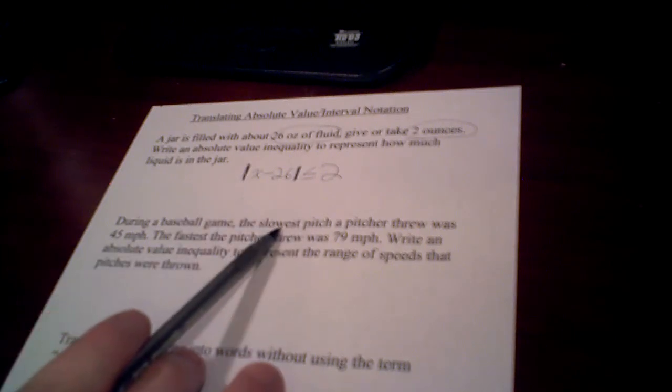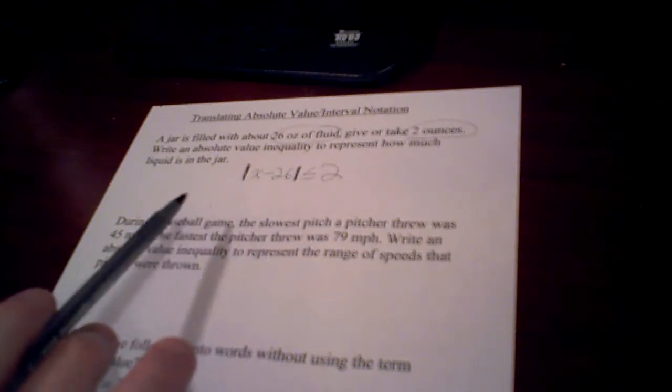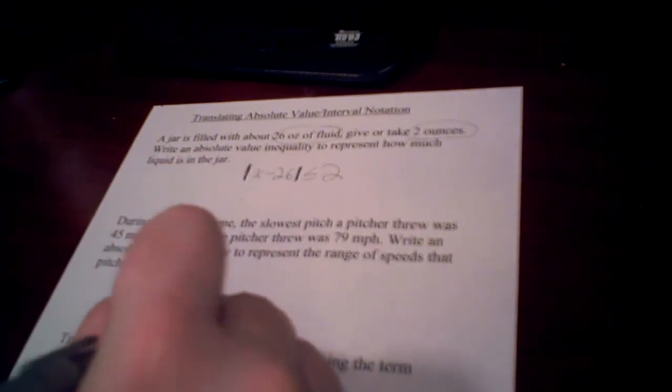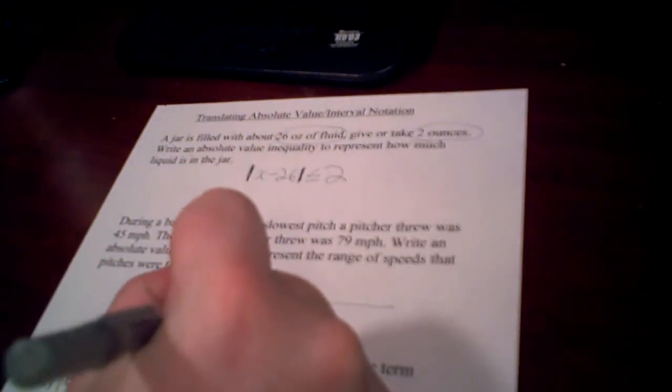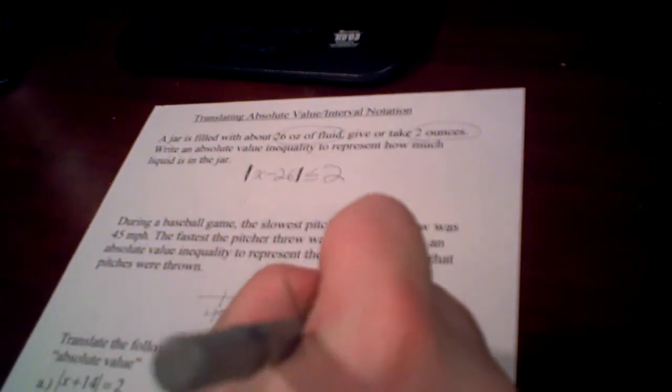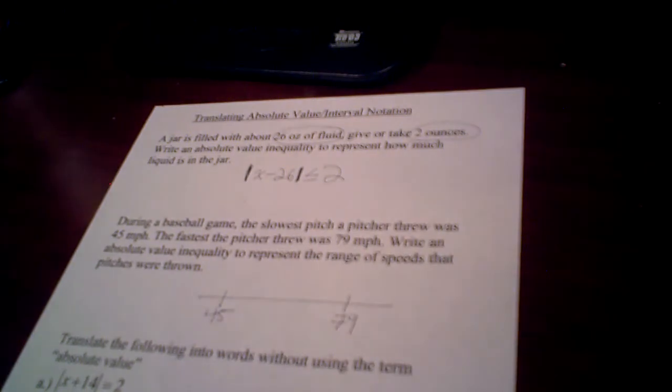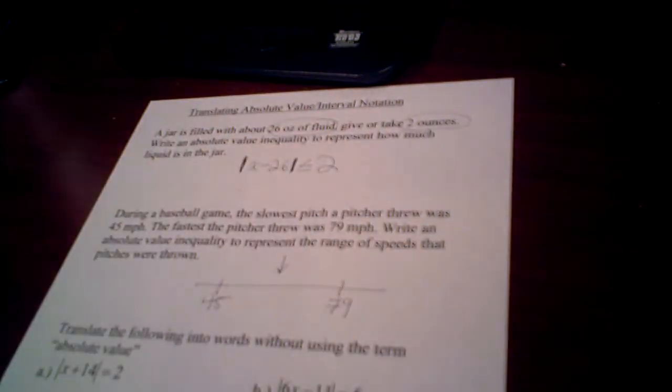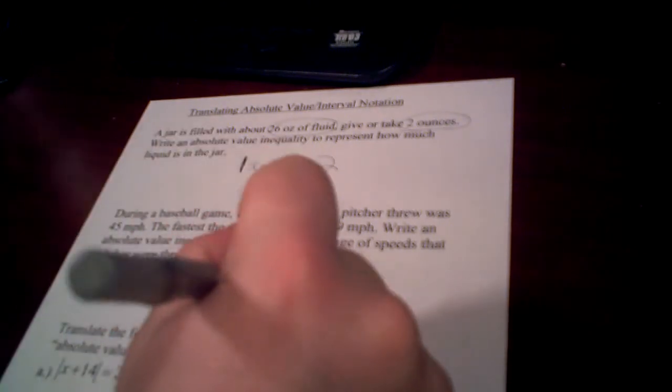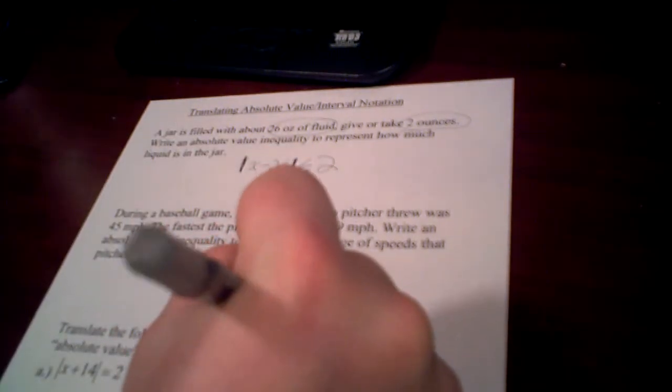So on this one they give you the slowest and the fastest, the smallest and the biggest. So make yourself a little number line. Put the smallest and the biggest. So what you want to find now is the middle. Just take the average of 45 and 79, which is 62.